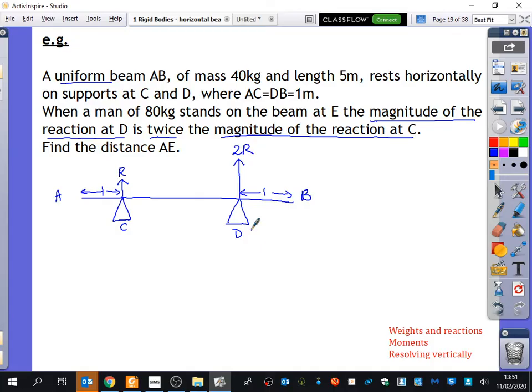Now, where do you think the man would be standing to make the reaction at D bigger? Do you think he's standing closer to C or D? He's standing closer to D. And if you think about being the beam, if someone was putting pressure on this part of you, this reaction is going to be bigger. It doesn't really matter where you put it because the maths will sort it out for you. But you do need to, it's good to try and think about where should it be. So if I was going to put the man over here closer to D, he might be on the other side. I don't know. I think he's probably going to be on this side because if he went on that side, it's possibly going to be rotating.